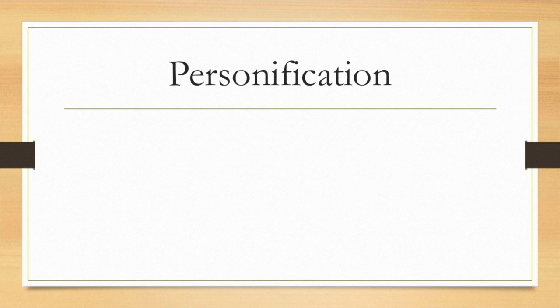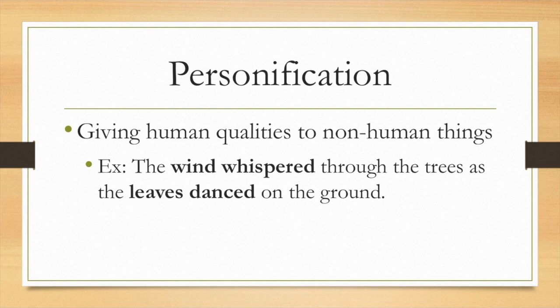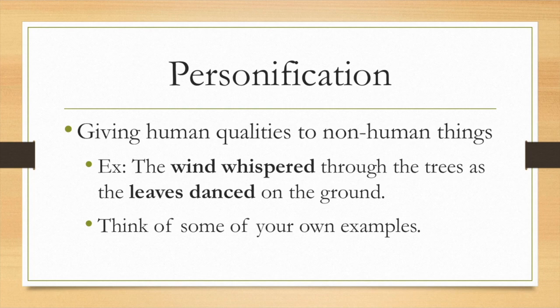The next academic word is personification. Personification is when we give human qualities to non-human things. A good example would be: the wind whispered through the trees as the leaves danced on the ground. Wind cannot whisper and leaves cannot dance — these are human-like qualities applied to non-human things. Try to think of some of your own examples and write them in on your Talking to the Text Organizer.